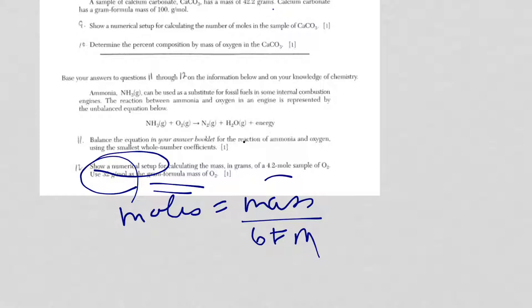In this case, I have the moles. 4.2 moles is equal to the mass (my X) over the gram formula mass, which is 32. This is the numerical setup. I'm done.